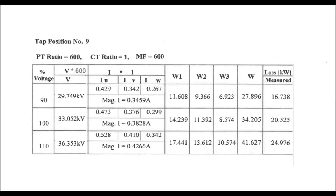Normally this test is done at the nominal tap, that is at tap position 9. Since the PT ratio is 600 and the CT ratio is 1, the multiplication factor for the wattmeter is 600. The test is done at 90%, 100%, and 110% of the rated voltage. The voltage from the pulse generator is gradually increased, and at each voltage level the current in each phase and the wattmeter readings are recorded.